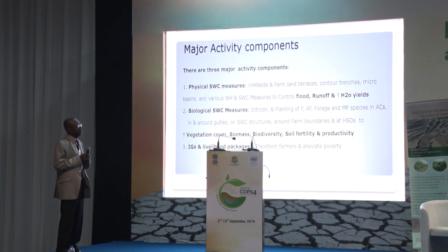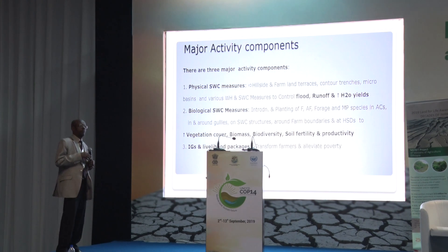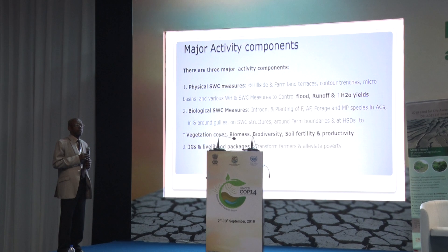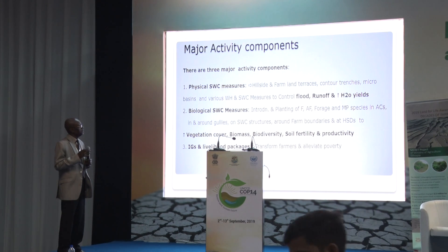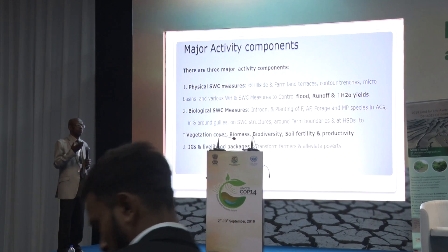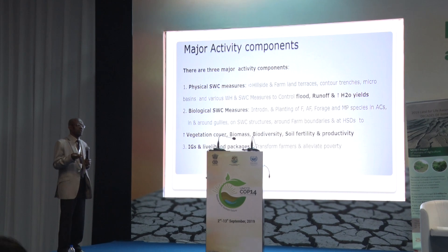The project implemented three major activity components. The first is physical soil and water conservation activities, such as hillside and farmland terraces, contour trenches, micro-basins, and various water-harvesting soil conservation measures. The purpose is to control accelerated runoff and erosion, and to prevent loss of rainwater from the catchment.